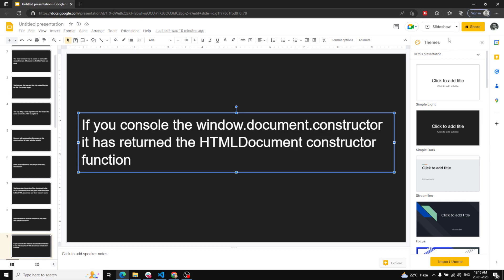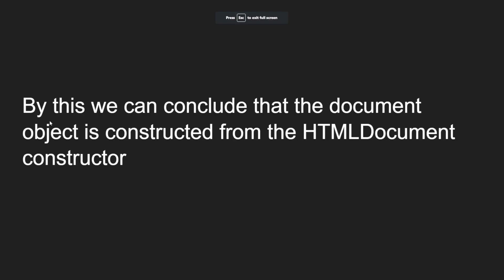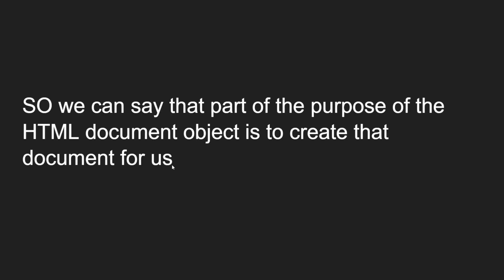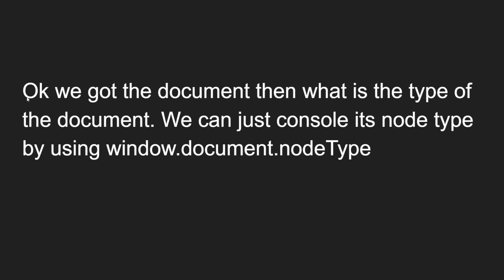We can conclude that the document object is constructed or created from the HTMLDocument constructor function. The HTMLDocument constructor is what creates the small-d document object. The purpose of the HTMLDocument object is to create the document for us. The browser itself calls this HTMLDocument constructor automatically when the HTML is loaded, and in return that constructor function creates the document object.